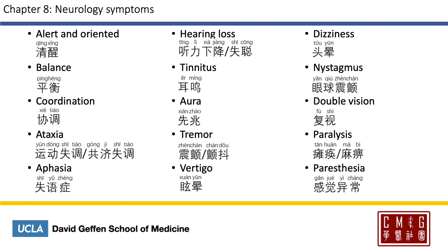For neurology symptoms, alert and oriented can be translated as 清醒. Balance is 平衡. Coordination is 协调. Ataxia is 运动失调 or 共济失调; 运动失调 is probably the more easily understood. Aphasia is 失语症. Hearing loss is 听力下降 or 失聪. Note that 失聪 doesn't mean that one loses one's intelligence — it means hearing loss, or complete hearing loss.